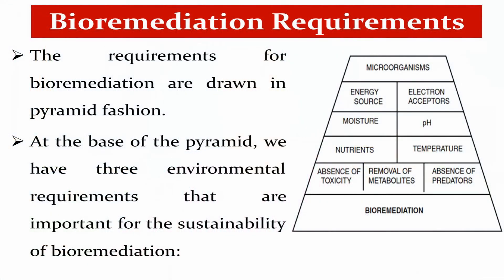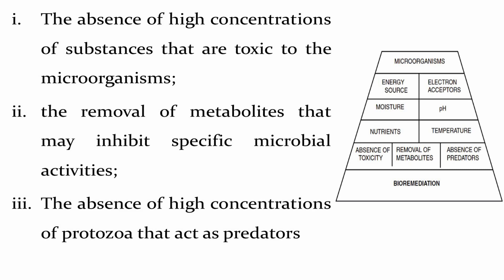Now we explain the bioremediation requirements, drawn in a pyramid fashion. At the base of the pyramid are three environmental requirements important for bioremediation sustainability: absence of high concentrations of substances toxic to microorganisms, removal of metabolites that may inhibit specific microbial activities, and absence of high concentrations of predators such as protozoa. At the top of the pyramid are the microorganism's needs: energy source, electron acceptors, proper pH, temperature, and nutrients. All of these requirements are important for successful bioremediation.